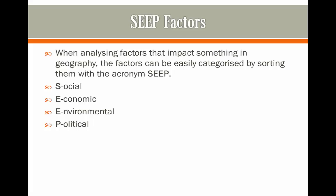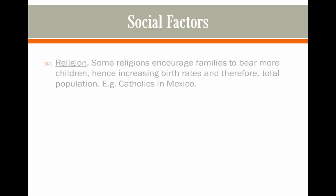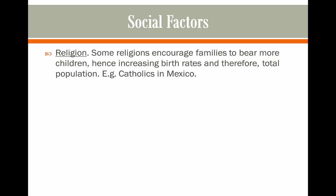This is how we're going to classify all the factors. First, we're going to look at social factors, and the first social factor is religion. For example, Catholicism and Islam encourage families to have kids and also teach families not to use contraception because of different beliefs.